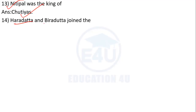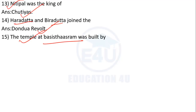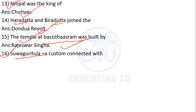Haradaptro and Viradaptro joined the Dandua Revolt. A custom connected with Huaguri Tula — what is Huaguri Tula? It is related to marriage (Ahomiya vibah). Also, who built the Nil temple at Raja's instruction?